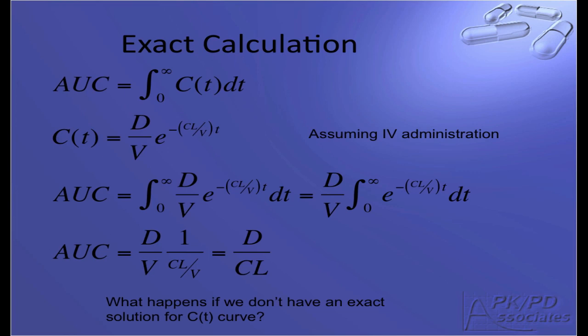Let's start with the exact calculation. We start with the relationship that AUC is equal to the integral of the concentration time curve from time 0 to infinity. Assuming IV administration, we can represent the concentration time curve with the equation dose over volume times the exponential minus clearance over volume times the time. Substituting this equation into the integral and pulling out the constants, we arrive at dose over volume times the integral of the exponential. This is a solvable integral and can be represented by 1 over the quantity clearance over volume. This then simplifies to dose over clearance as the area under the curve. This equation is very simple and very useful to know. But what do we do if we don't have an exact solution for the concentration time curve?